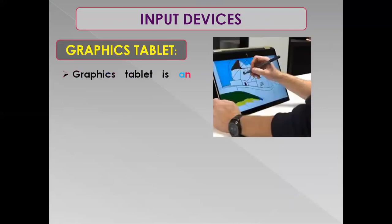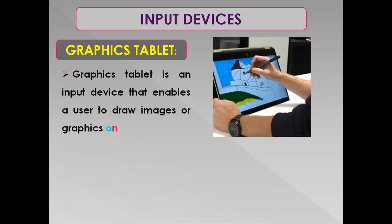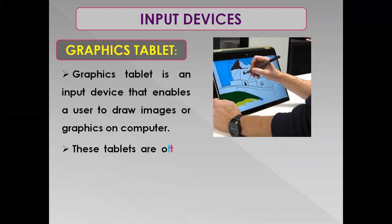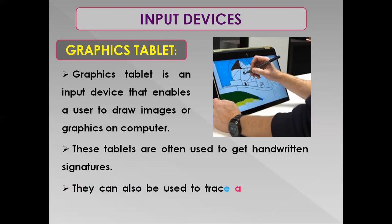Then comes graphics tablets. A graphics tablet is an input device that enables a user to draw images or graphics on computer, including freehand drawing. These tablets are often used to get handwritten signatures. If you want to get a handwritten signature on any official letter or something, then you will be using a graphics tablet.